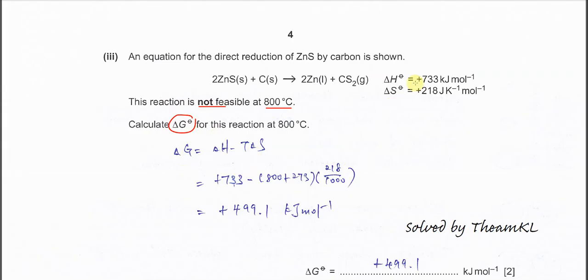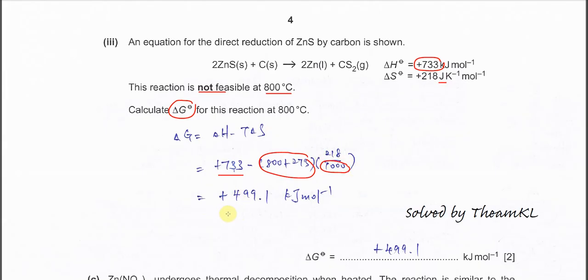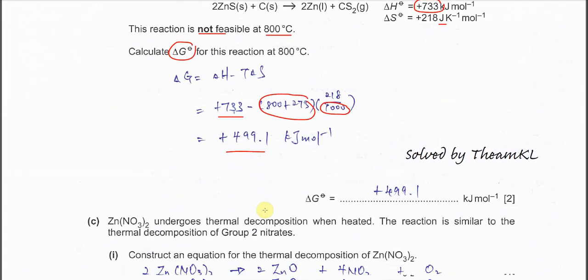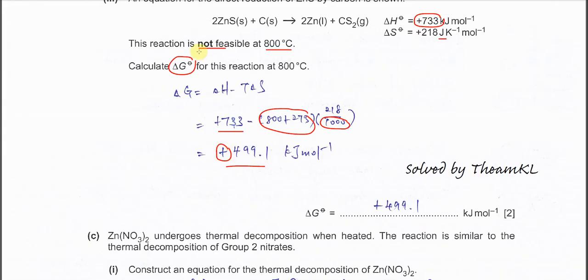Substitute the enthalpy given, 733, and the temperature needs to be in Kelvin, so 800 + 273. Remember, entropy you have to convert from joules to kilojoules, so ΔS now you need to divide by 1000. After that, ΔG you should get positive 499.1 kJ/mol. The ΔG now is positive, so it proves that this reaction is not feasible at 800°C.